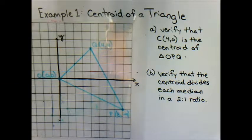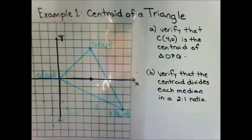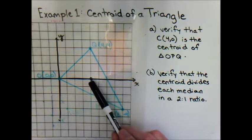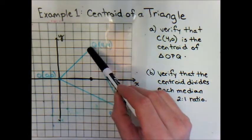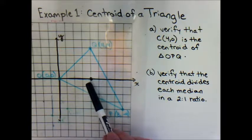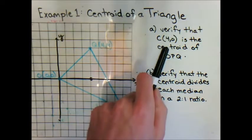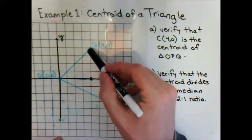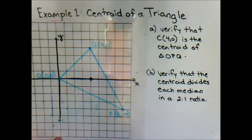In Example 1 we are analyzing the centroid of a triangle. Given triangle OPQ, we need to verify that point C at (4, 0) is the centroid. The centroid is the point of intersection of the three medians, so we need to show that the coordinates (4, 0) satisfy the equation of each of the three medians. If point (4, 0) satisfies each equation, it lies on all three lines and is the centroid.